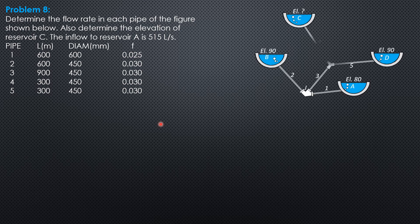Here is the given figure. Knowing the inflow to Reservoir A, we can compute the head loss. Then we can locate the energy level at junction J.